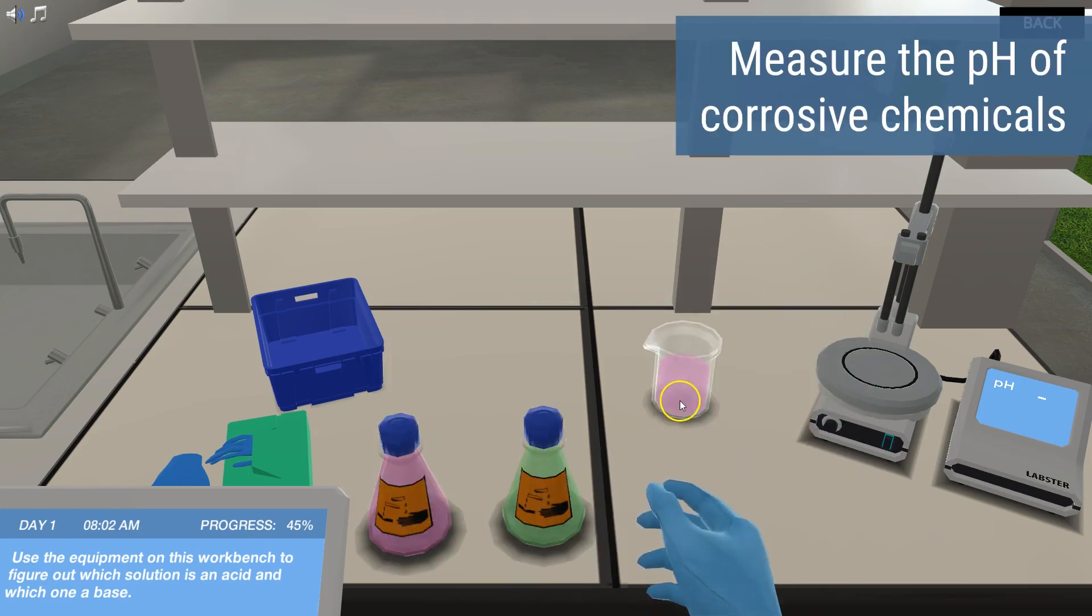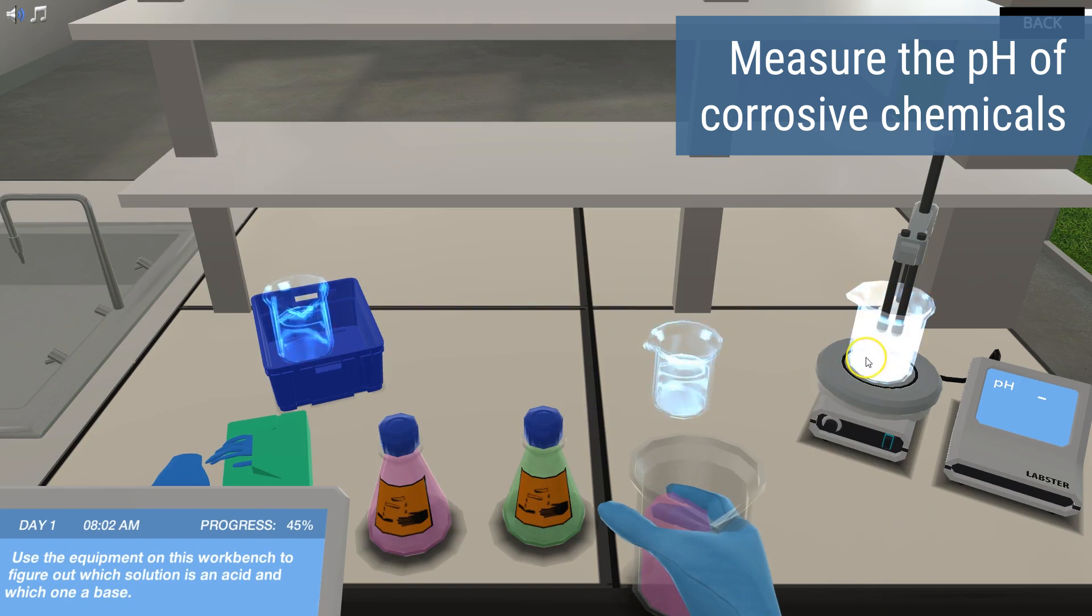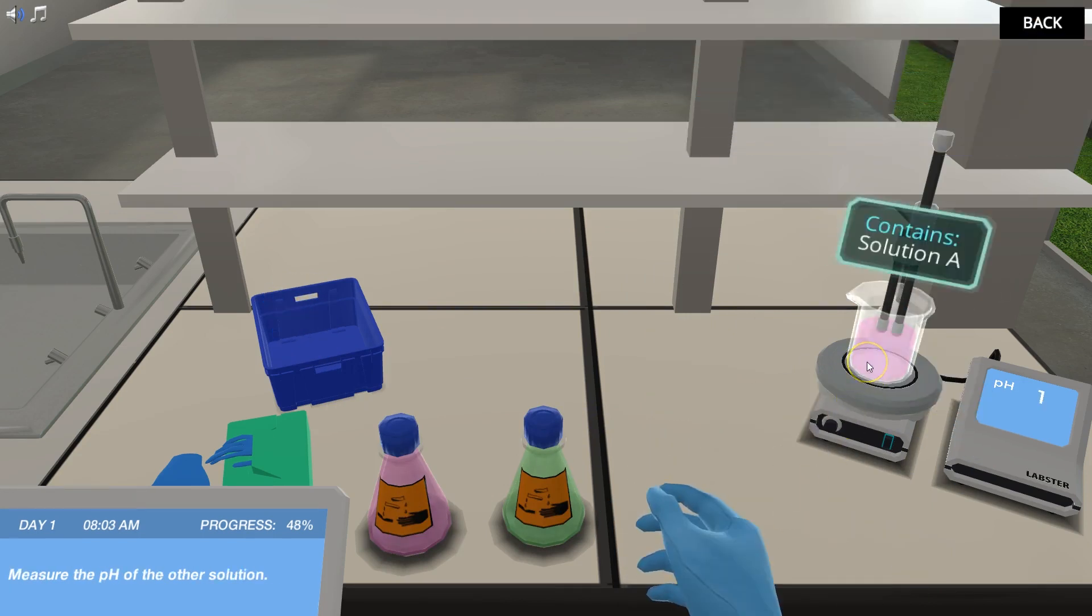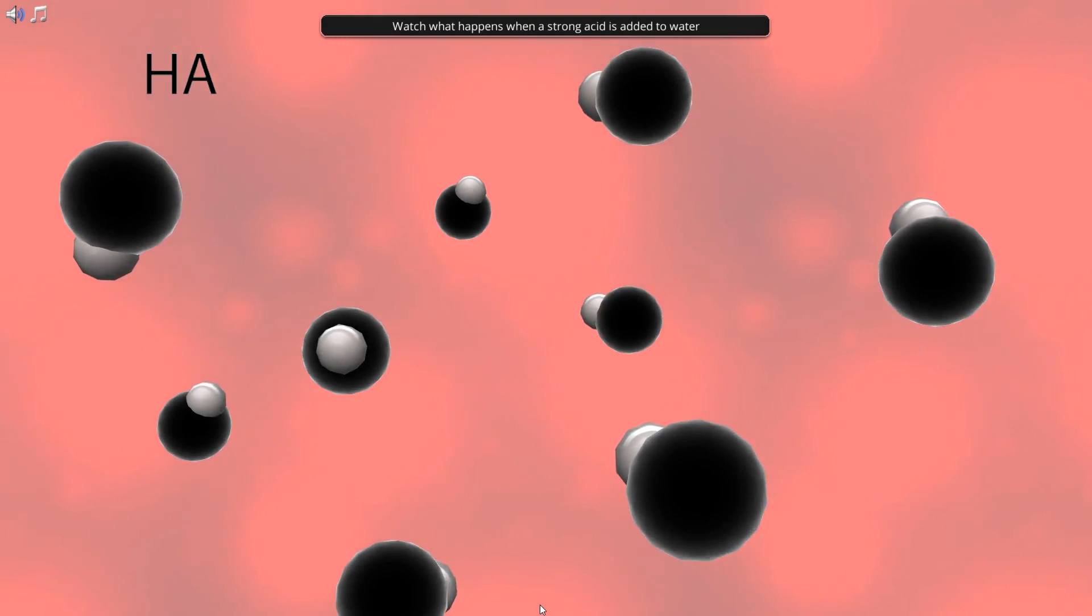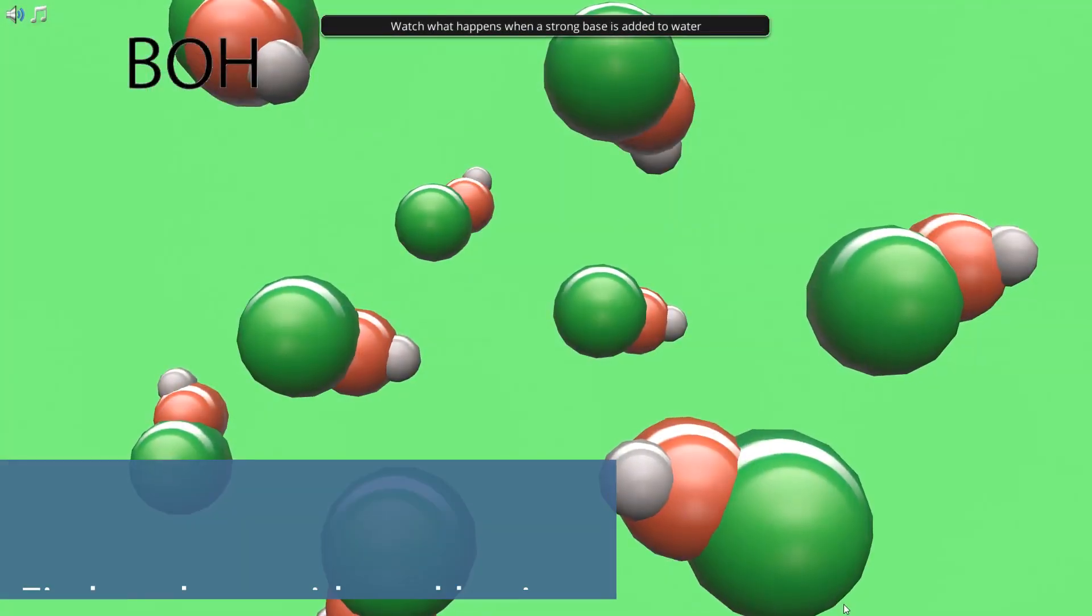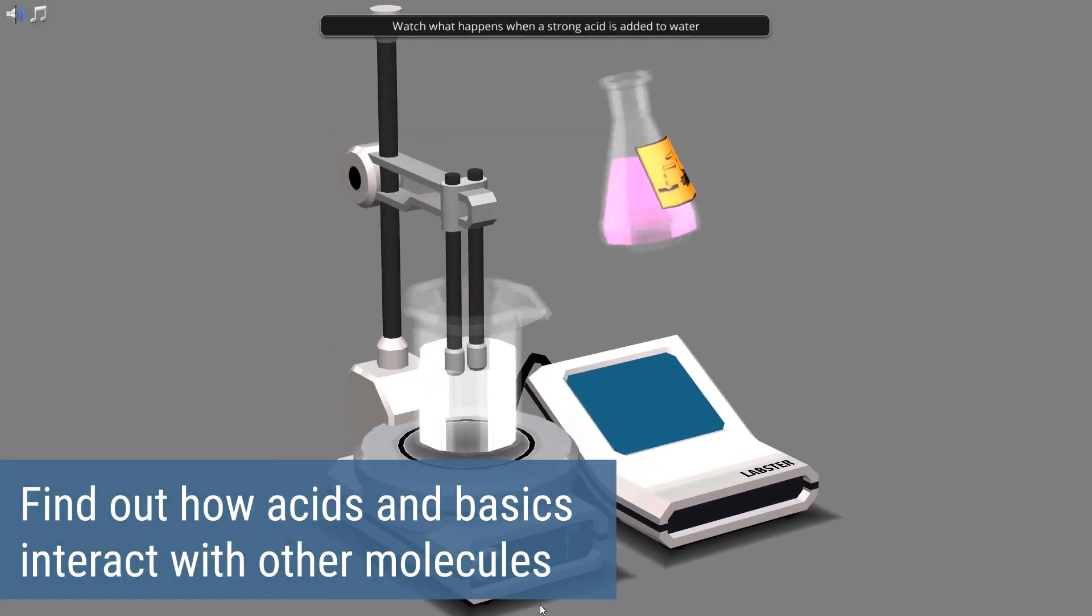Grab a pH meter to measure the pH of strong corrosive chemicals and identify the mysterious solutions. Learn the difference between strong acids and bases and find out how they interact with other molecules.